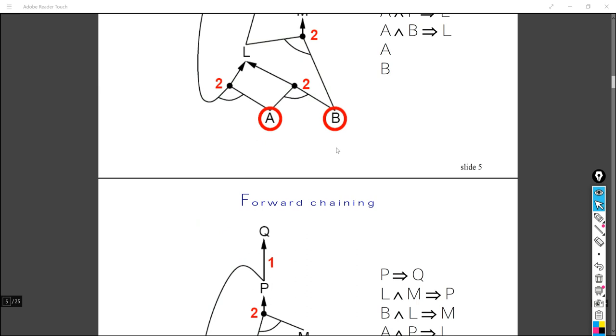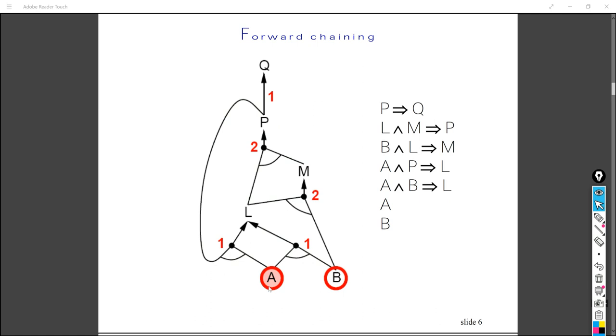So first of all, we are going to implement A. As you can see, if we allow A to become true, then this value and this value decrease to one. So for this point here, it only has one unknown node, which is P, and for this point here, it's B. However, we will only move forward when the node here decreases to zero. So here, as we can see, it's just one and two here, so we just do nothing. And next, we will also implement B here.